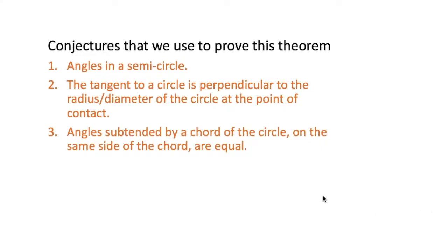When you prove a theorem, you need to know which conjectures you are going to use. For this tangent-chord theorem, you're going to use three: angle in the semi-circle, the tangent of a circle is perpendicular to a radius or diameter, and angles in the same segment are equal. We're going to use those three theorems to prove the theorem.